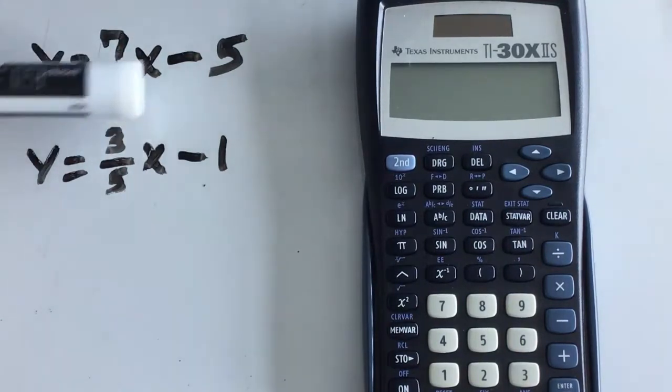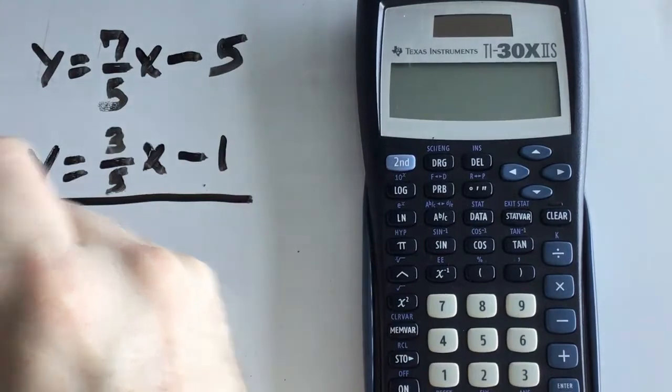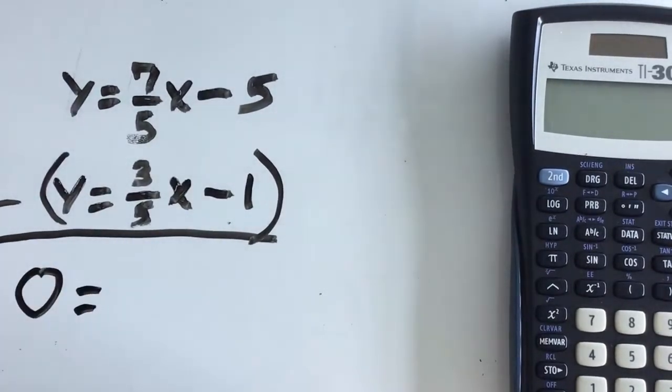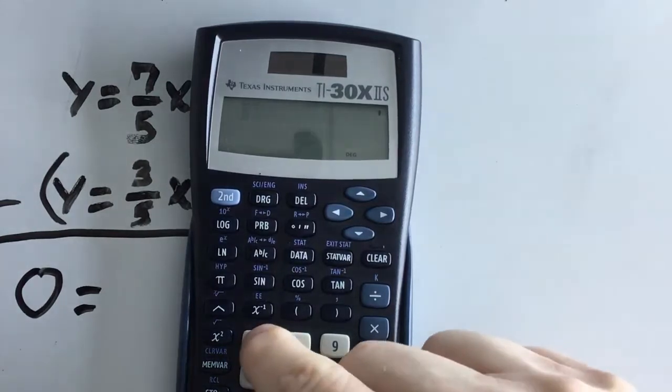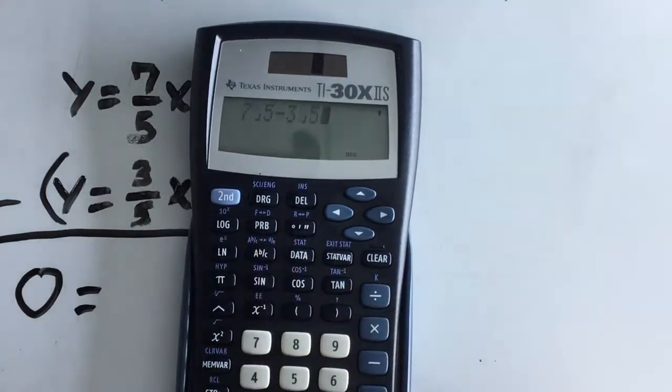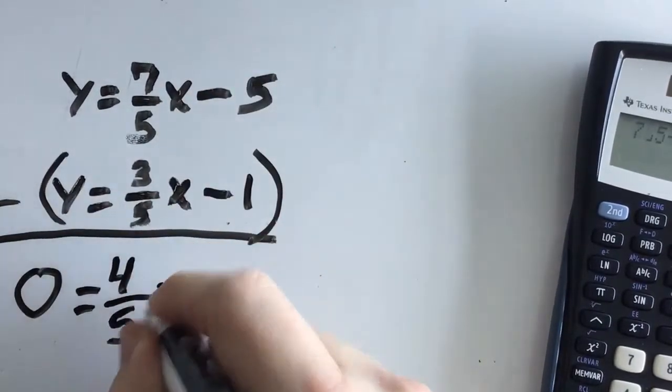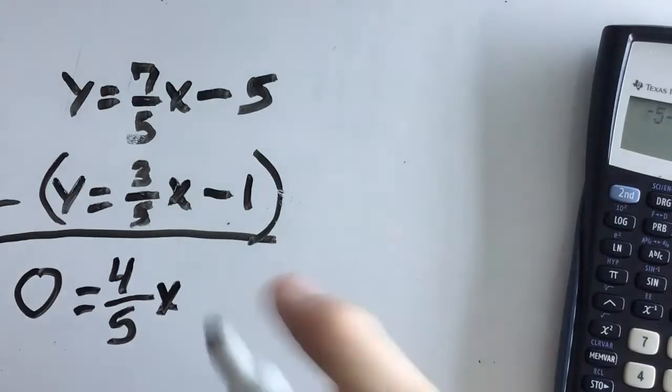So, what we're going to do is subtract each and every one of these using the calculator. So, Y minus Y. That's zero. Seven-fifths minus three-fifths. Let's say we don't remember how to do that. Well, this calculator does a wonderful job of fractions. I can press seven, A, B, C, five. The A, B, C is your fraction button. Minus three, A, B, C, five. And I see I get four-fifths. And, of course, that was my X. And now I'm going to do negative five minus negative one, which is negative four. Or, in other words, minus four. And now I have a straightforward problem to solve.